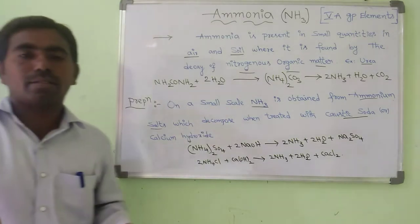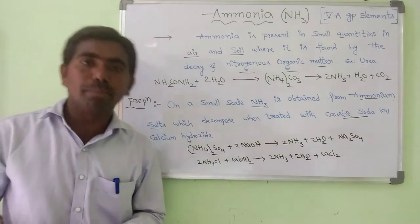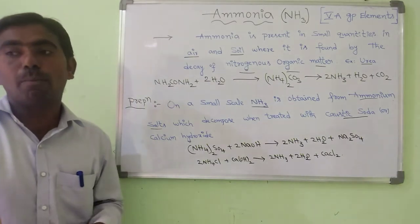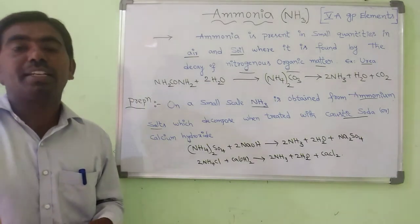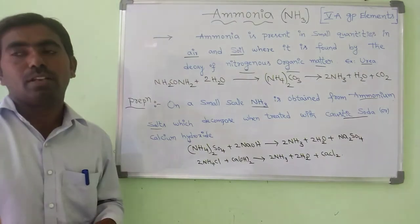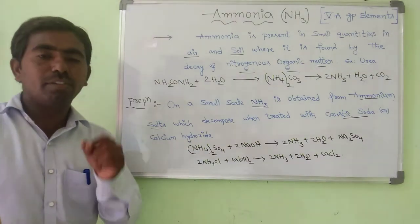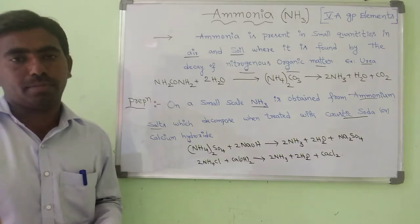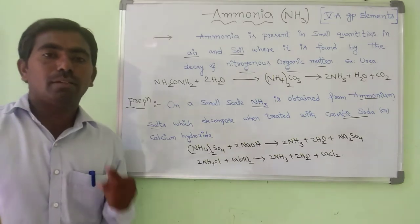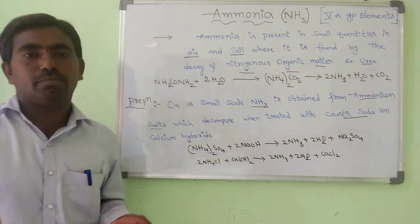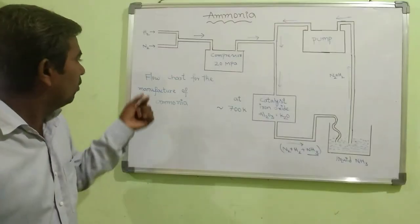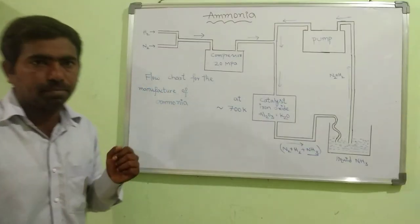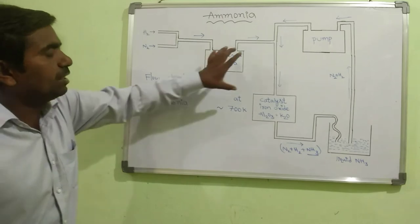The next method is the industrial method. In the industrial method, we can prepare ammonia in large quantities. For that, we generally use the Haber's process. Now we will go to the Haber's process. Here is the flowchart for the manufacture of ammonia by the Haber's process.